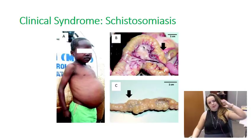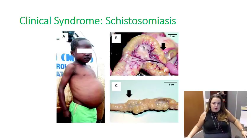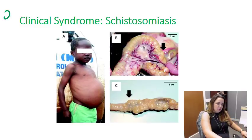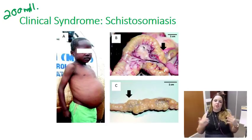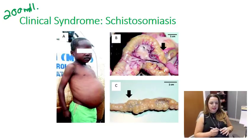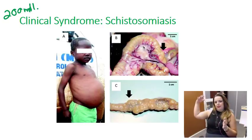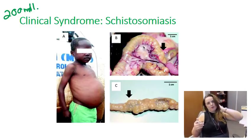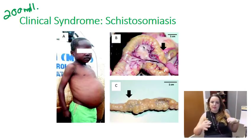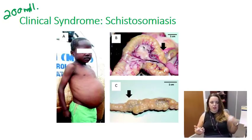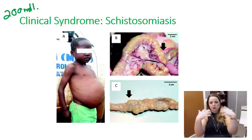Schistosomiasis also goes by the names bilharziasis or snail fever. It is a major parasitic infection of the tropics, affecting about 200 million people worldwide. It's a result of the body's reactions to the worm's eggs. It can present acutely and also manifest chronically. If you had an acute infection and then years later got infected again with a different strain, species, or antigenic variation, you can experience an acute reinfection — and that's actually what leads to Katayama syndrome.